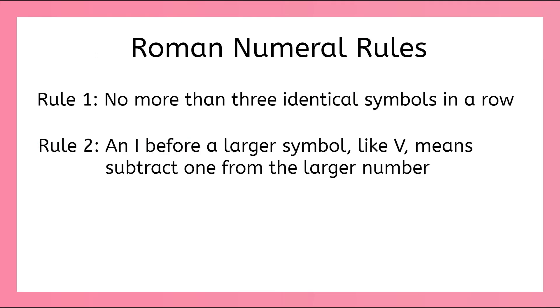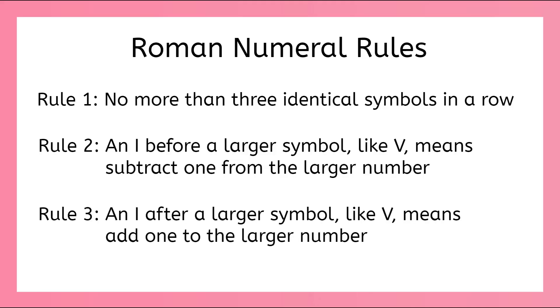So now we can add a third rule to our Roman numeral rules. What rule helped us write 6, 7, and 8? Rule 3 says an I after a symbol for a larger number, like V, means add to the larger number. Great work!